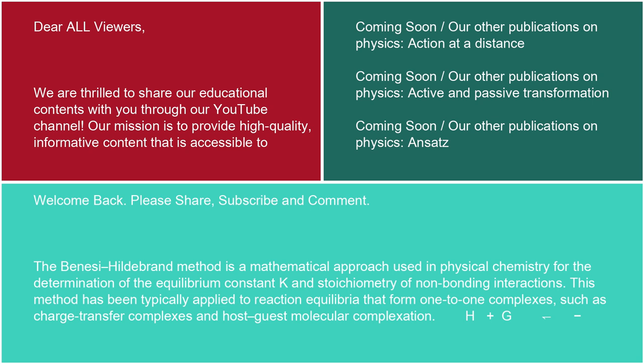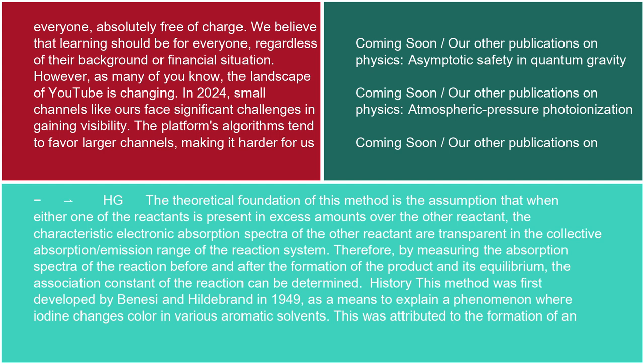H + G ⇌ HG. The theoretical foundation of this method is the assumption that when either one of the reactants is present in excess amounts over the other reactant, the characteristic electronic absorption spectra of the other reactant are transparent in the collective absorption/emission range of the reaction system. Therefore, by measuring the absorption spectra of the reaction before and after the formation of the product and its equilibrium, the association constant of the reaction can be determined.